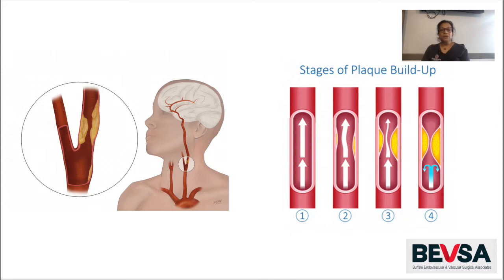Usually carotid disease does not have any associated symptoms. However, if the narrowing continues, it can become significant enough to limit the blood flow and oxygen to the brain and then cause a stroke. In addition, the plaque buildup in the carotid arteries can sometimes break off into smaller particles and go up into the brain and can cause temporary or permanent damage, either like a TIA as a warning sign or a completed stroke.